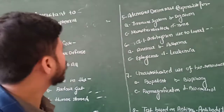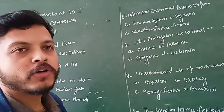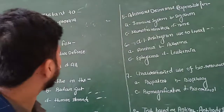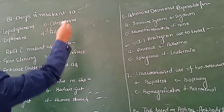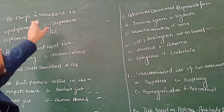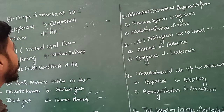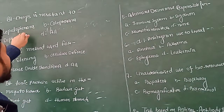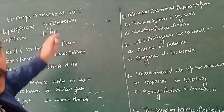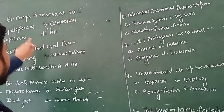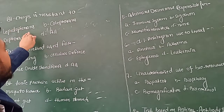Today we are going to discuss some important questions on the topic of biotechnology and their applications. The first question is about Bt crop, which is an insect-resistant crop resistant against different types of insects like lepidopterans, coleopterans, and dipterans. So the correct answer is 'all'.